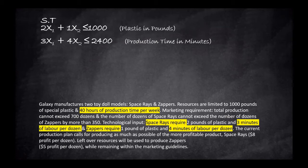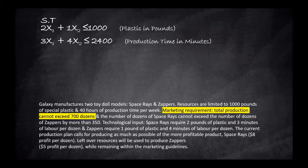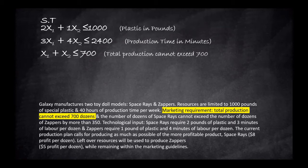The next constraint deals with the marketing requirement. The company's total production cannot exceed 700 dozens — it means all dozens produced must sum to 700 or less. That gives us: x1 + x2 ≤ 700 units.